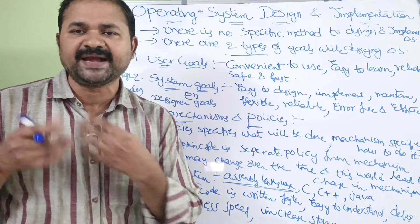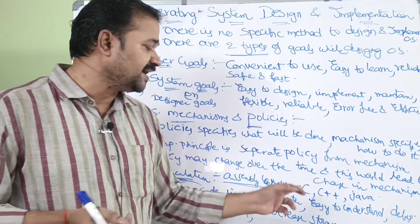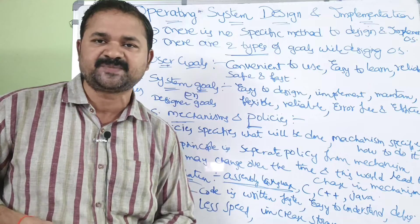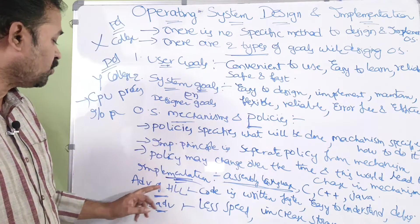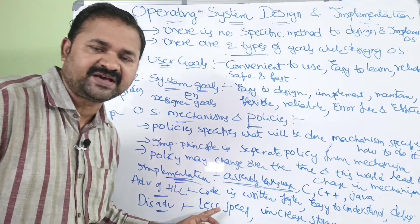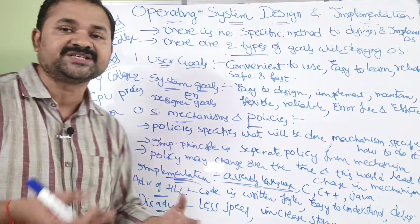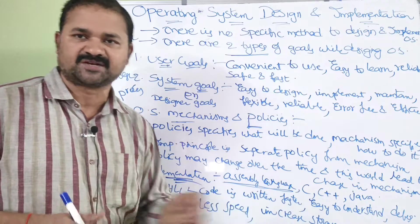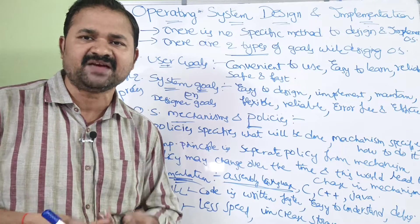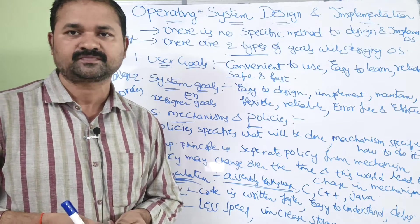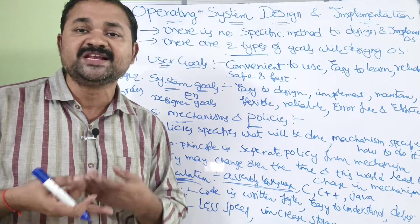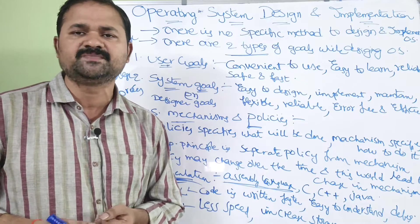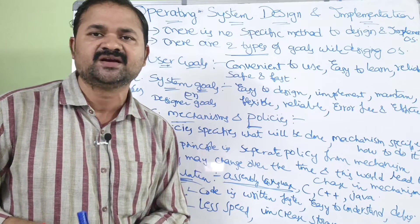Nowadays, operating system code is written with the help of high level programming languages like C, C++, and Java. Now let us see the advantages of high level languages. The first advantage is that code is written very much faster, because high level programming language is in the form of English alphabets, digits, and symbols, so we can remember it very easily and write the code very fast.